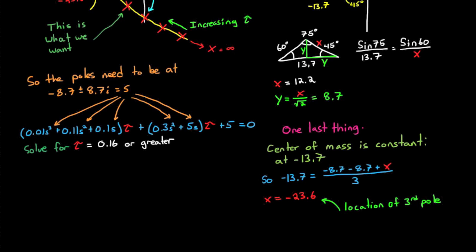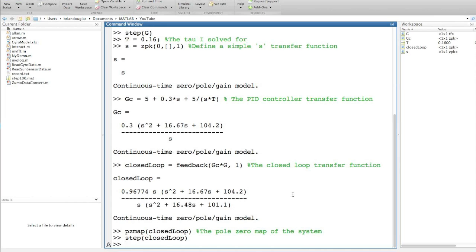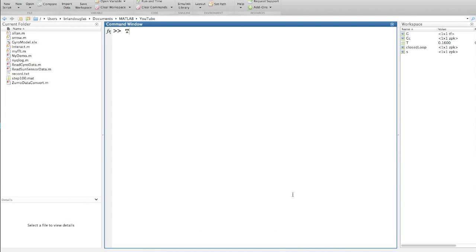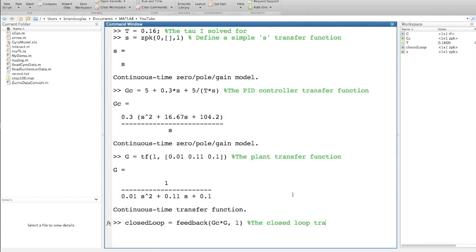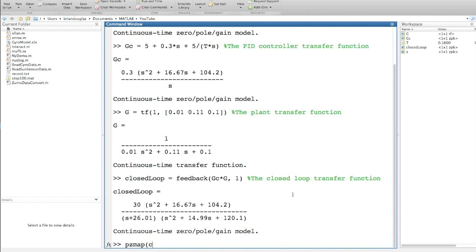Alright, I'll start by setting tau equal to 0.16, and then I'll define S as a standalone transfer function, which will make defining the system transfer functions easier going forward. Our PID controller is this, G sub C, and our plant, G, is this from earlier. And I can calculate the closed loop transfer function using the feedback command with a 1 in the feedback path. Remember unity feedback. And I can plot the location of the closed loop poles and zeros with the command PZMAP.